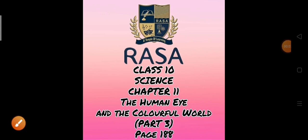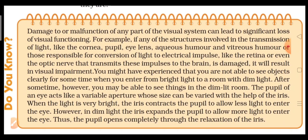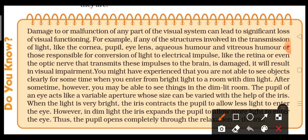Good morning class. Today I welcome you all on behalf of Rasa International School to study science chapter number 11 of class 10th: The Human Eye and the Colorful World. It is on your book page number 188. In this we will discuss about the damage or malfunction to an eye, and how damage to any part of the visual system can lead to significant loss of visual functioning.